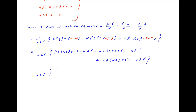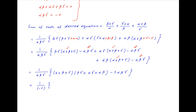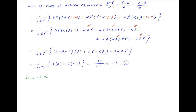This simplifies to (1/alpha·beta·gamma) times: combining terms with (alpha + beta + gamma), we get (alpha + beta + gamma)·(beta·gamma + alpha·gamma + alpha·beta), and combining the three alpha·beta·gamma terms gives -3·alpha·beta·gamma. Substituting the known values, we get (1/-r)·(p·0 - 3·(-r)) = 3r/(-r) = -3. Let's call this Result 1.